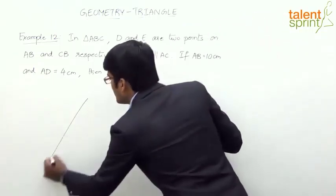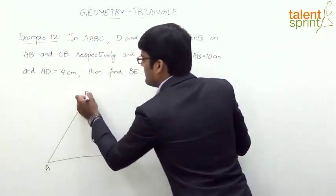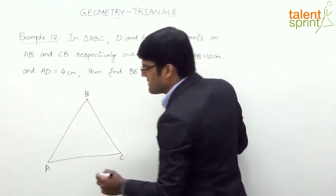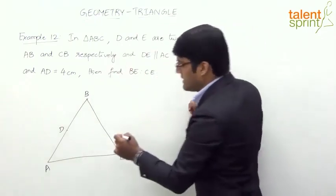So triangle ABC, say this is the triangle ABC: A, B, and C. Now D and E are two points on AB and CB respectively. So D is the point on AB and E is the point on CB.